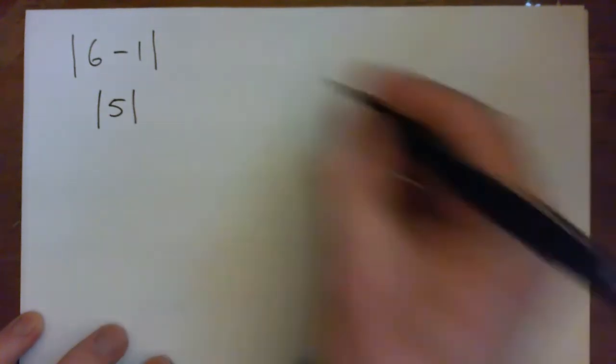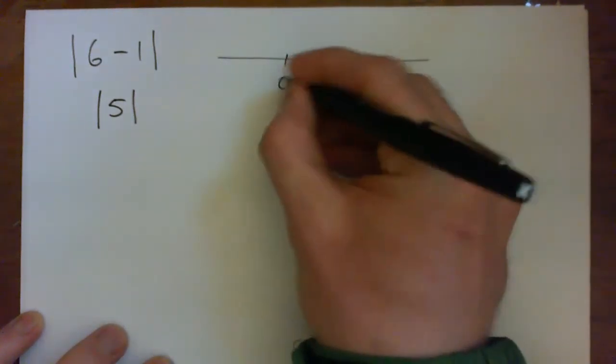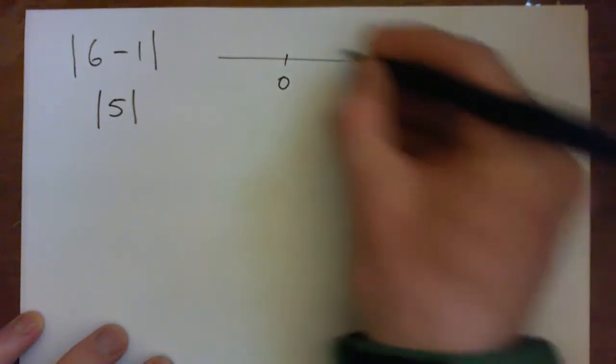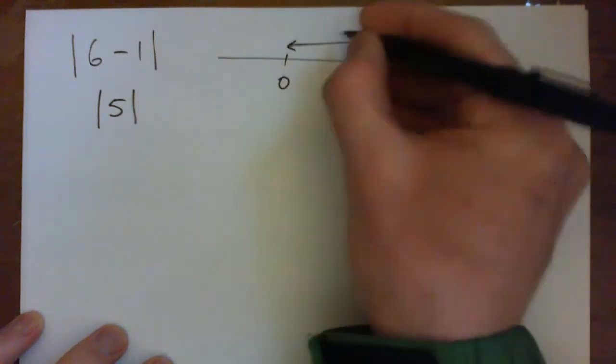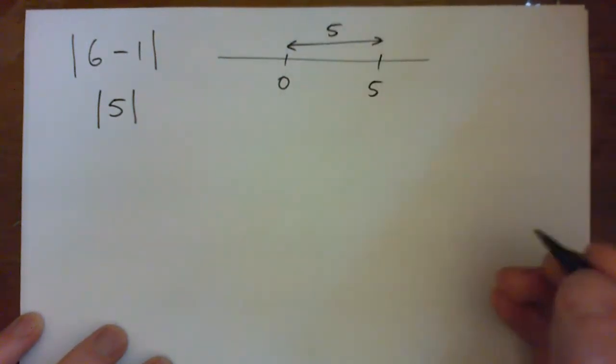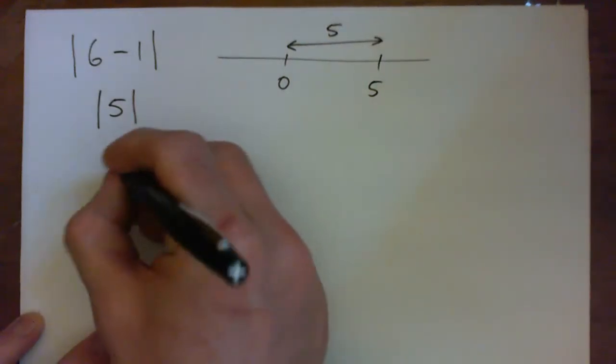I can also think of it as the distance between 0 on a number line and the number 5. See that distance there is 5 and the distance can never be negative. So the absolute value of 5 is just 5.